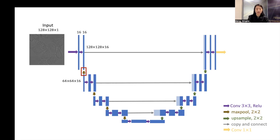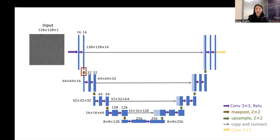Then we put this feature map into two convolutional layers which generate 32 features. The output has a size of 64 by 64 by 32. Then we repeat the max-pooling and downsample the features to 32 by 32 by 32, and pass the features into convolutional layers which generate 64 features, giving a feature map of 32 by 32 by 64. We then repeat the max-pooling and convolution and get a feature map with a size of 8 by 8 by 256. This is the encoder part of UNet.